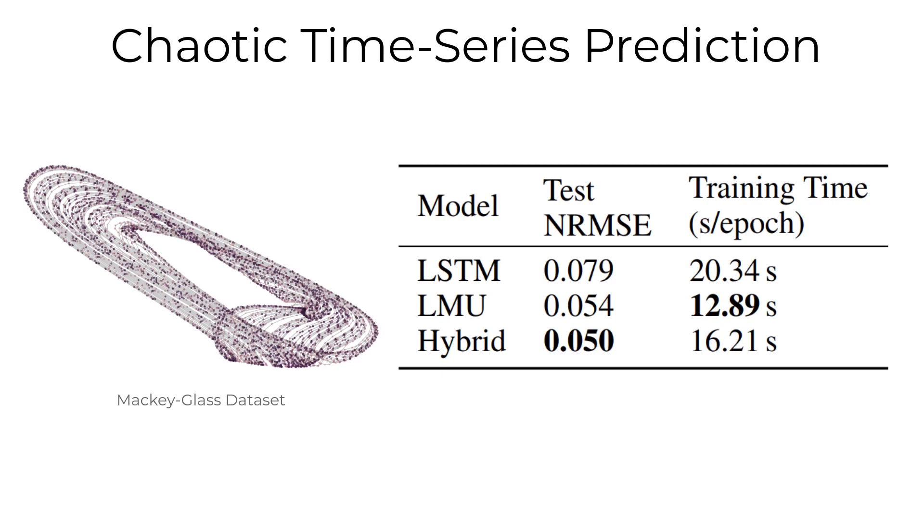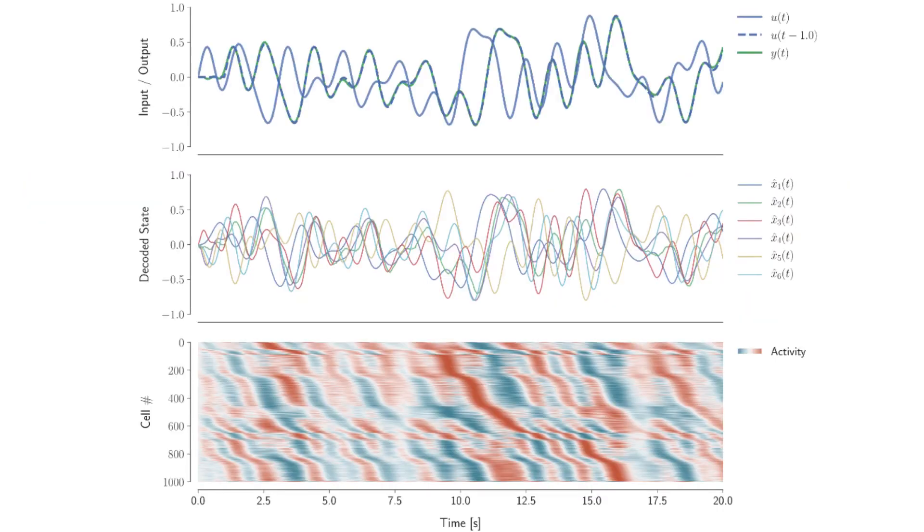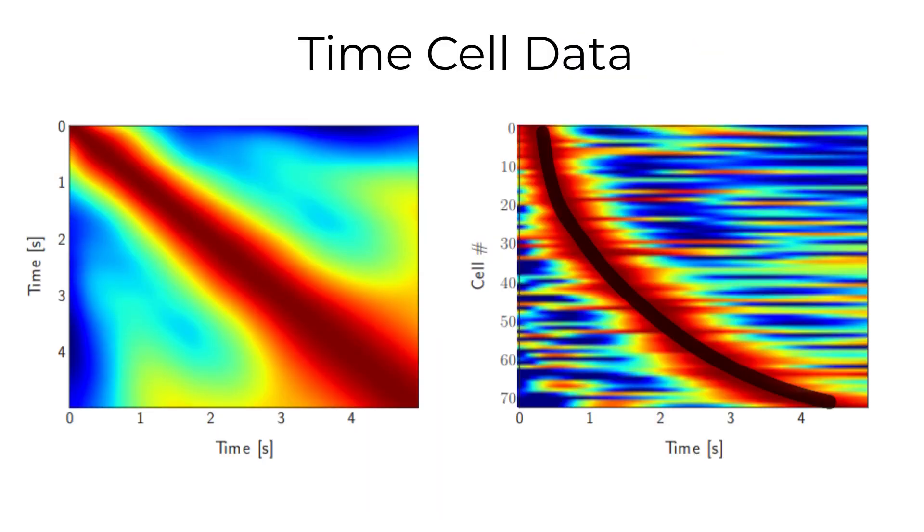The LMU can be implemented using spiking neurons, and the resulting patterns in spiking activity have been linked to neural time cells observed in hippocampus, striatum, and medial prefrontal cortex.